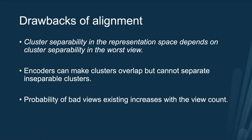The main issue of alignment in multi-view clustering is that cluster separability in the representation space becomes dependent on the cluster separability in the worst view. If you have a view that is completely uninformative, the alignment will essentially align all other views to that view, making the representation worse. This happens because the encoders can make clusters overlap but cannot separate clusters that are inseparable in the input space. We find that the probability of the existence of a bad view increases with the number of views.